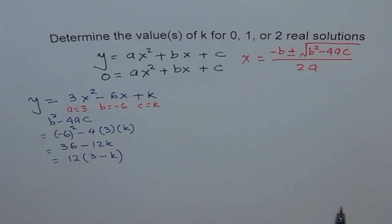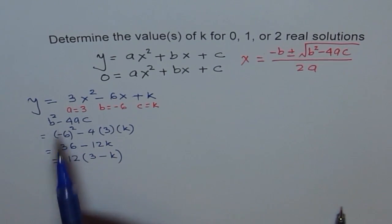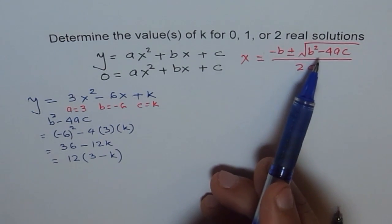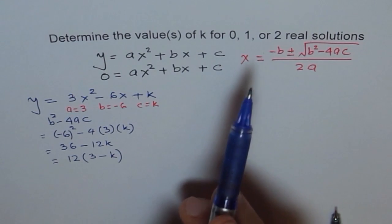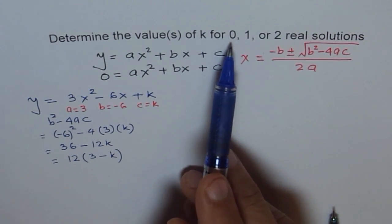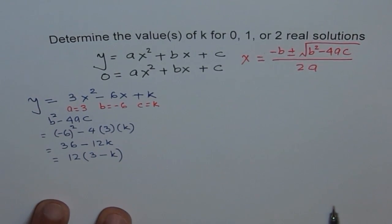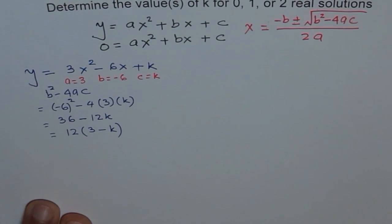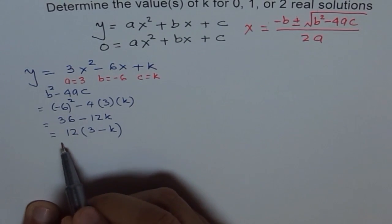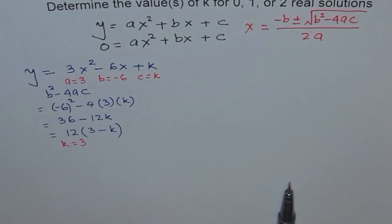So b squared minus 4ac equals 12 times (3 minus k). We need to figure out for what values of k this discriminant is 0, positive, or negative. If k equals 3, then 3 minus 3 is 0, so the discriminant is 0 and we get just one solution. If k is less than 3, say k equals 0, then 3 minus 0 equals 3, which is positive, so we get 2 solutions.